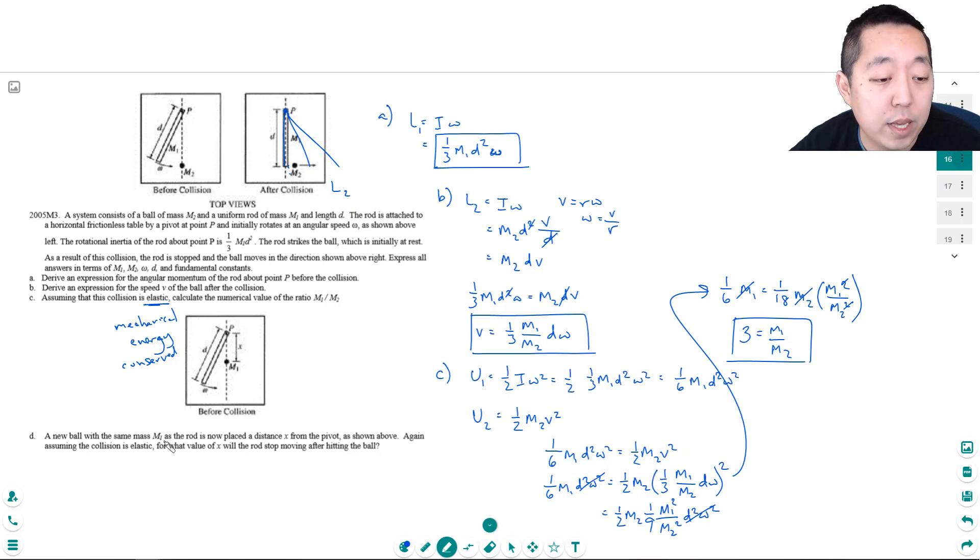Part D: a new ball with the same mass m1 as the rod is now placed the distance x from the pivot as shown above. Again, assuming the collision is elastic, for what value of x will the rod stop moving after hitting the ball? So what I want is the energy before is one half i omega squared. Because I'm assuming... Because they said it's elastic. So this energy is conserved. So again, this is one half times one third m1 d squared omega squared. That's one sixth m1 d squared omega squared.